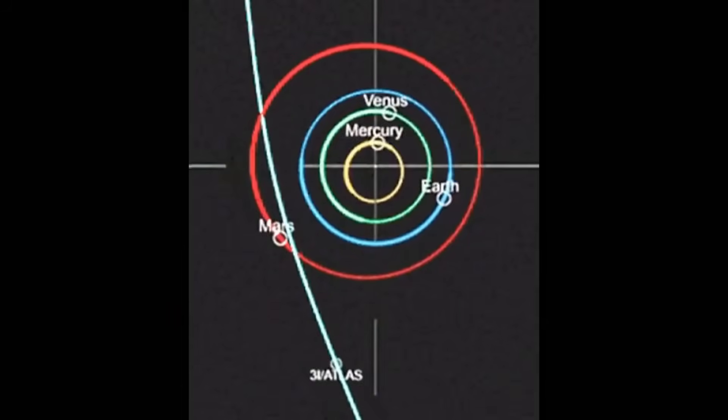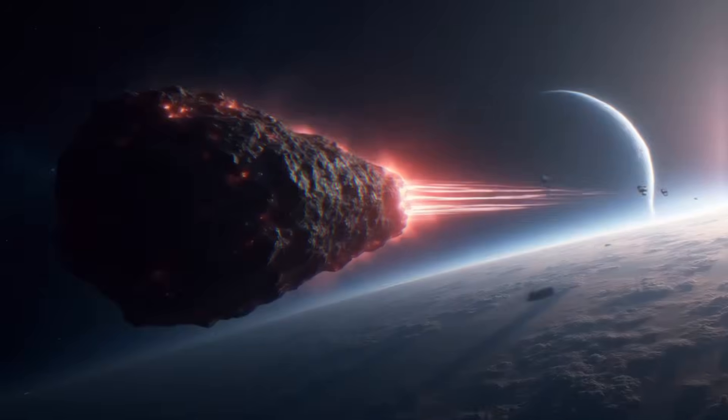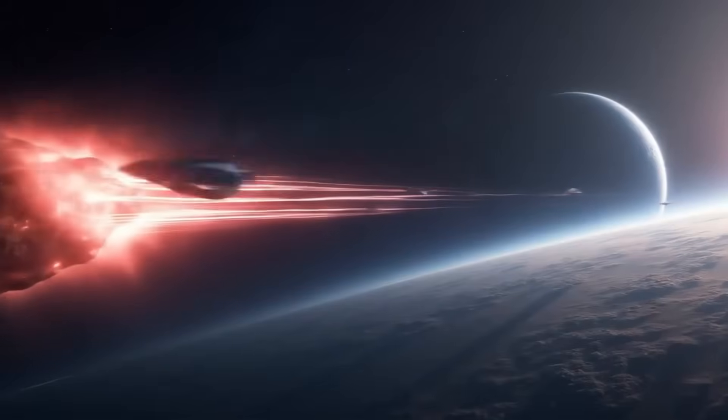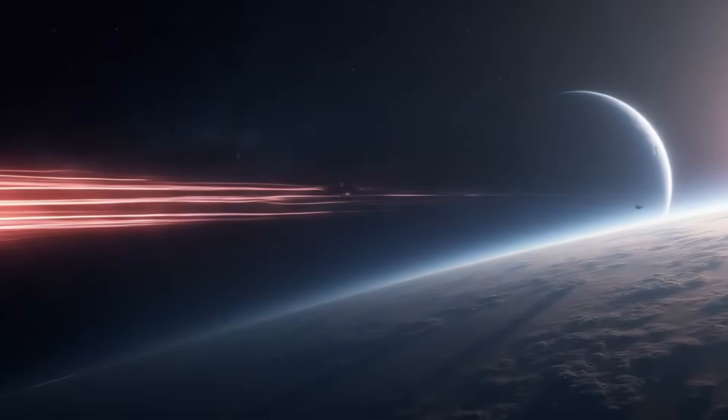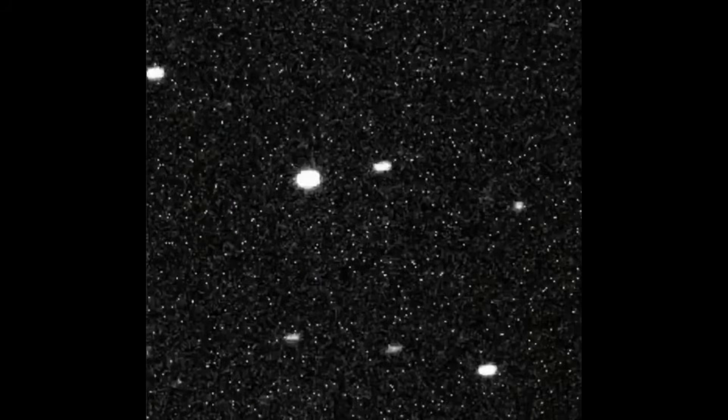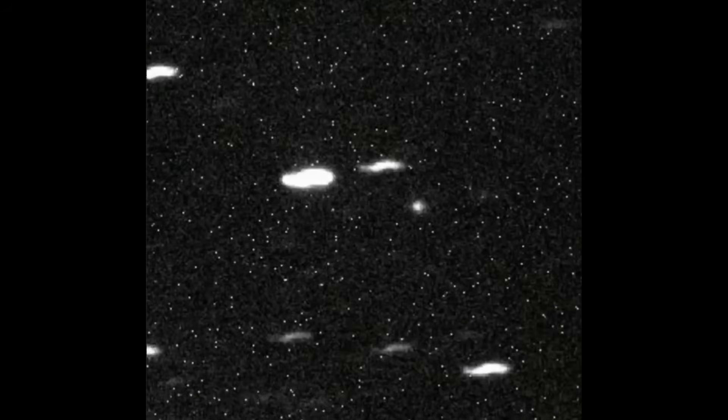3I Atlas held together. It endured its own self-inflicted storm, continuing on its path with its monstrous coma intact. The implication was profound and unsettling. The nucleus at the heart of this storm could not be the loose pile of ice and rubble that comets are made of. It had to be incredibly dense, structurally sound, and engineered to withstand forces that should have turned it into cosmic dust.